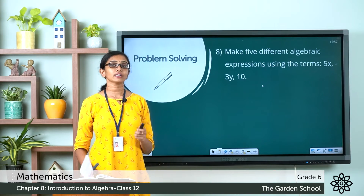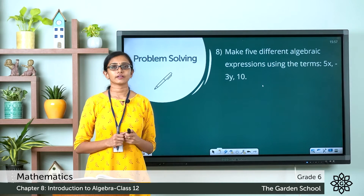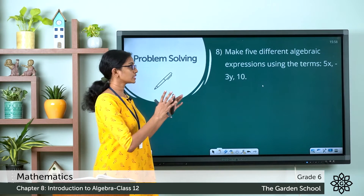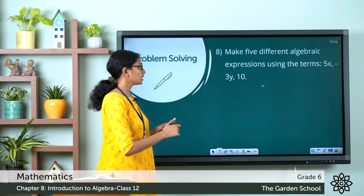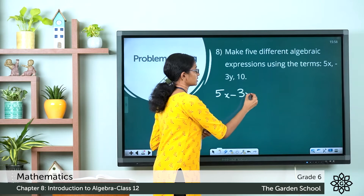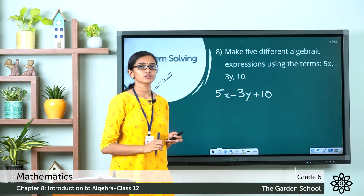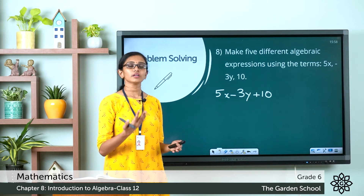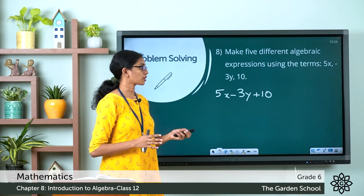You are given 3 terms: 5x, minus 3y, and 10. You are supposed to make algebraic expressions using different combinations of these terms. For example, 5x minus 3y plus 10. You can make your own algebraic expressions using the given terms and write them down in your notebook.